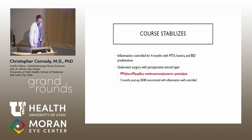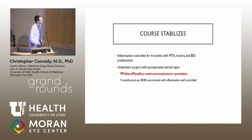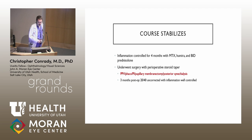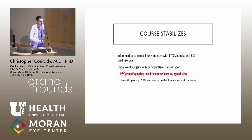We eventually got her inflammation controlled long enough that we could perform a pars plana vitrectomy, cataract surgery with a PI, pupillary membranectomy, and a posterior synechiolysis. Within three months of that complex surgery, she was already 20/40 uncorrected with no inflammation. I'll discuss our specific perioperative regimen at the end because these are fairly complex surgeries when we step into them.